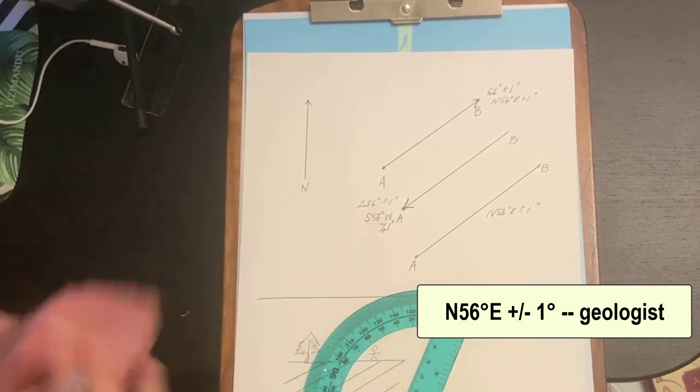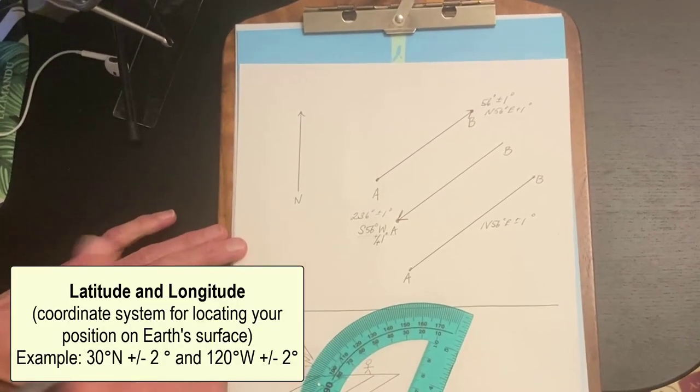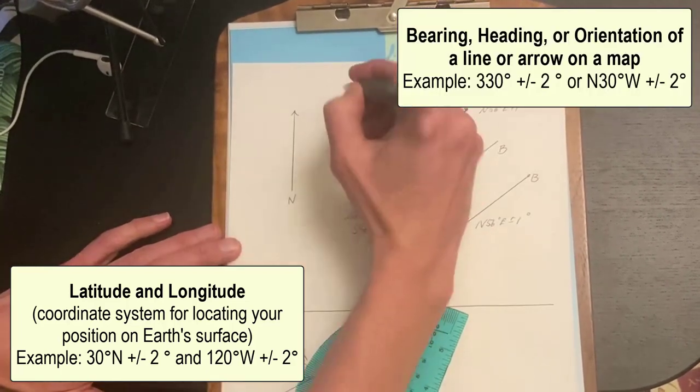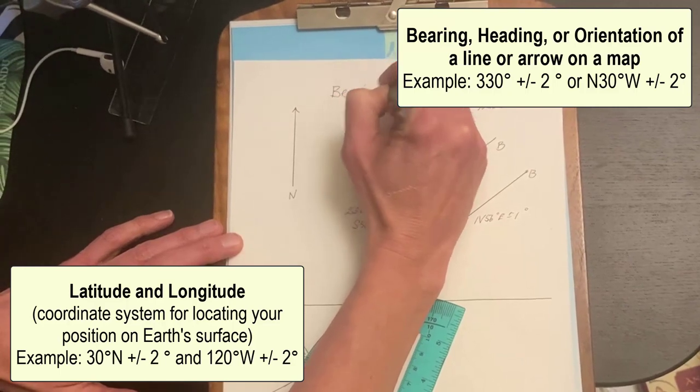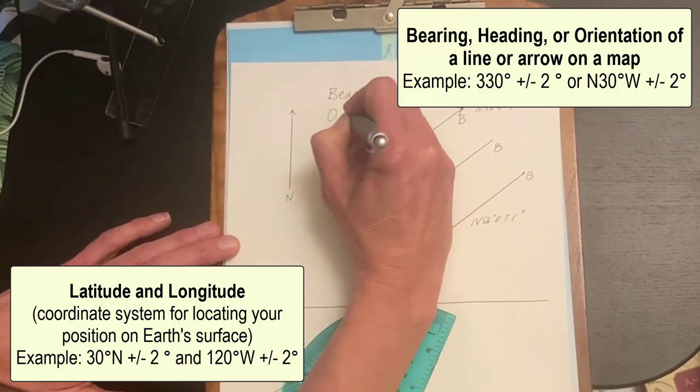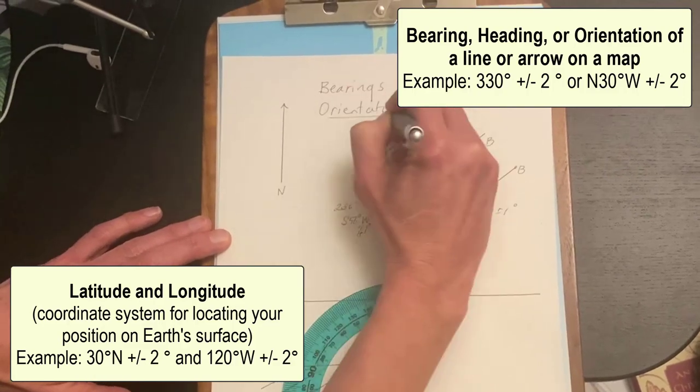Another thing you've learned about in this class is latitude and longitudes. Latitudes and longitudes are coordinate systems. They are not bearings. So this whole thing is about bearings, headings or what we also refer to as orientation of a line.